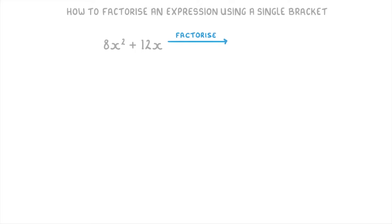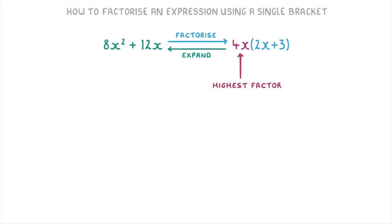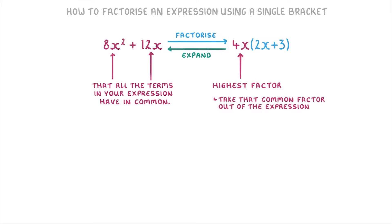In this video, we're covering how to factorize an expression using just a single bracket, like factorizing 8x squared plus 12x into 4x bracket 2x plus 3. If you already know how to expand brackets, then this is basically the exact opposite, because we're going from the expanded version to the bracketed version. The idea behind factorizing is you have to find the highest factor that all of the terms in your expression have in common, and then take that common factor out to be on the outside of a set of brackets.